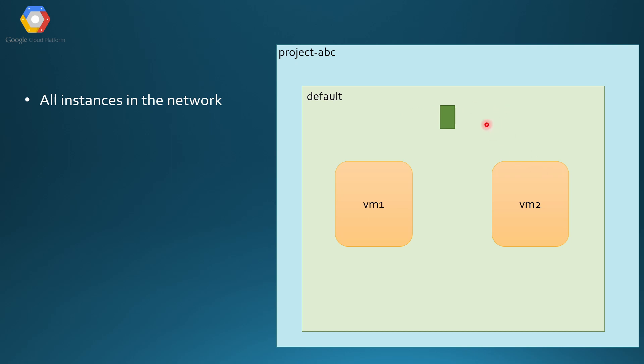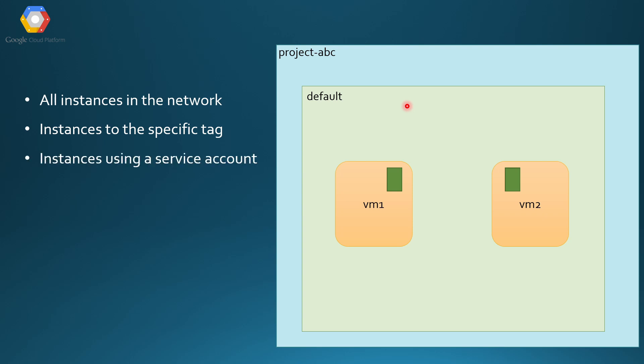You can create a firewall rule and say that it will be applied to all instances inside the network, or you can apply the firewall rule to a specific instance by specifying a tag. You can also apply a firewall rule to a service account — if you attach a rule to a service account and that service account is attached to a VM, the rule will be applied to the VM. These are the three ways to apply a firewall rule, and firewall rules only support IPv4 connections.